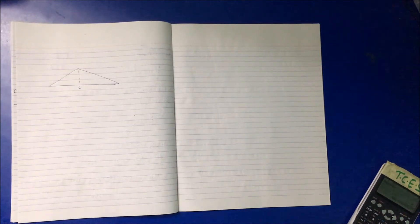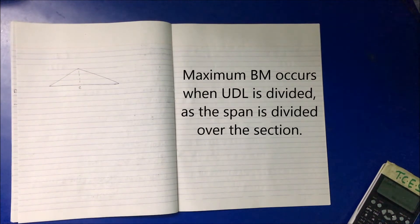For maximum bending moment, or for maximum moment, load position should be such that the section divides the load in the same ratio in both spans.